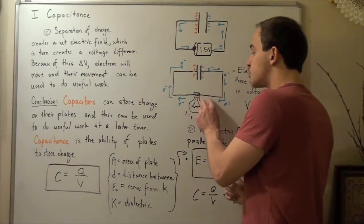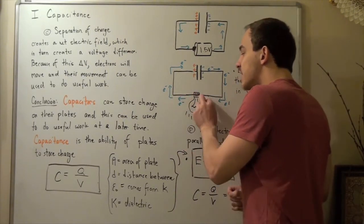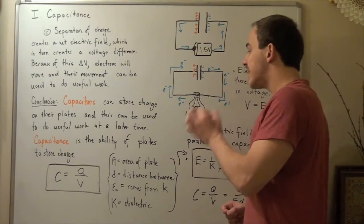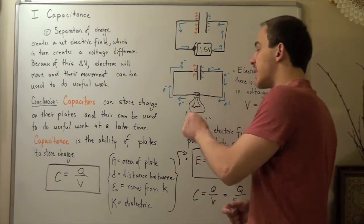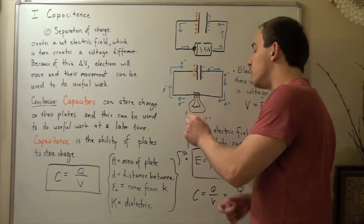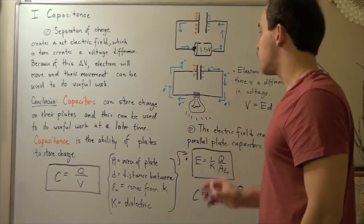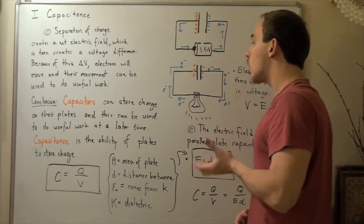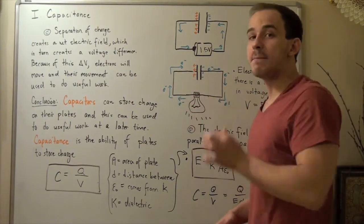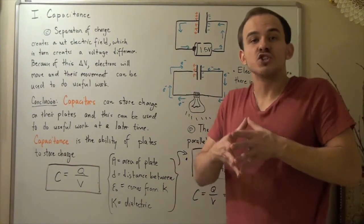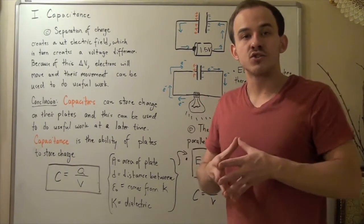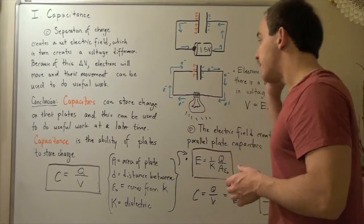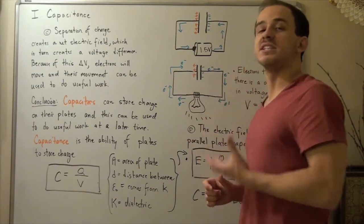This movement of electrons, due to a difference in electric potential, creates electrical work. When electrons travel through the light bulb, that electrical work is converted to thermal energy, and the light bulb will glow. Eventually, when the capacitor becomes fully uncharged — when the net charge between the two plates is zero — electrons will stop moving because there is no longer a voltage difference to drive them, and the light bulb will stop glowing.